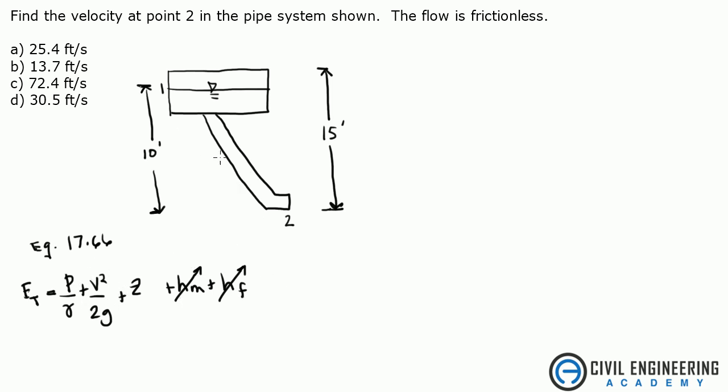What we're going to do is set the equations equal to each other and solve for the velocity at point 2.